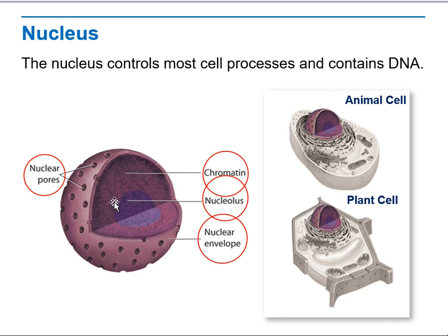We have the nucleus. The nucleus controls most cell processes and contains DNA. We have an animal cell and a plant cell. A nucleus contains nuclear pores, chromatin, nucleolus, and nuclear envelopes.